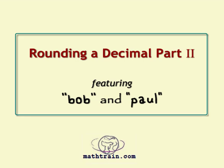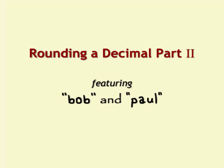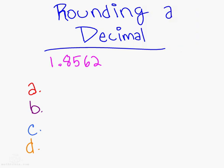Five or above, give it a shove. Four or below, keep it down low. Hi, it's Bob and Paul again, and we're back in action. The first thing we're going to do is round a decimal. We're going to round the number 1.8562.